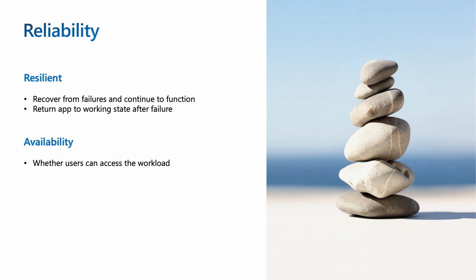The other thing is availability. Availability goes hand in hand with resiliency — it's whether the users can access the workload or not. The app stays up and keeps on working. It's resilient and it's always available. Together, those make an app reliable.